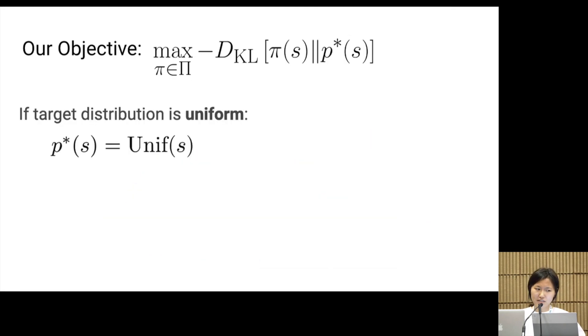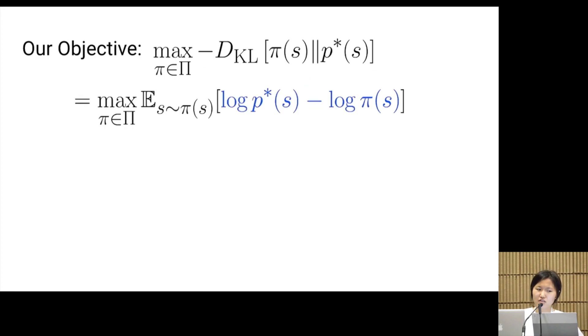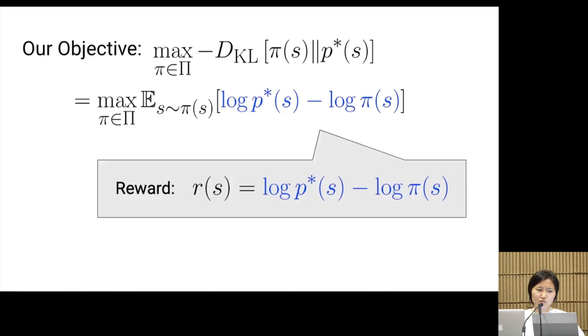In the special case when p* is uniform, the objective simply maximizes entropy over the state marginal. More generally, p* can be any distribution and our objective looks like this. From this expansion, we immediately see that our objective is equivalent to maximizing this reward function in blue text with a state entropy regularized policy.